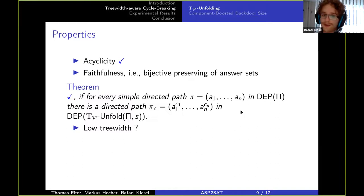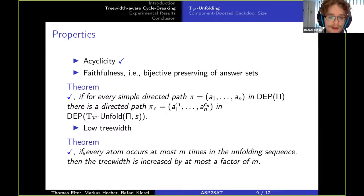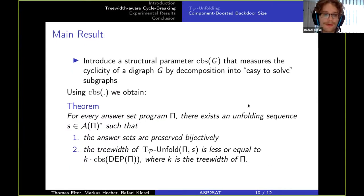And come back to our original point, well we wanted a cycle breaking of low treewidth. So is the treewidth going to be low? Well, that depends. But what we can see is that if every atom only occurs at most m times in this unfolding sequence s, then the treewidth will only at most grow by a factor of m.